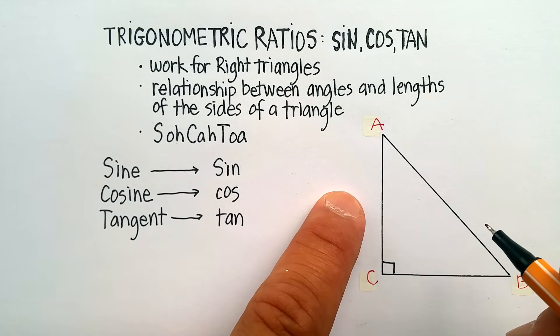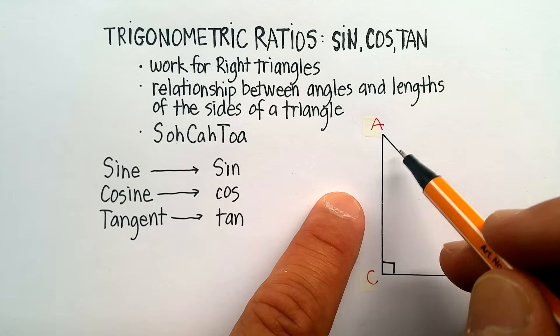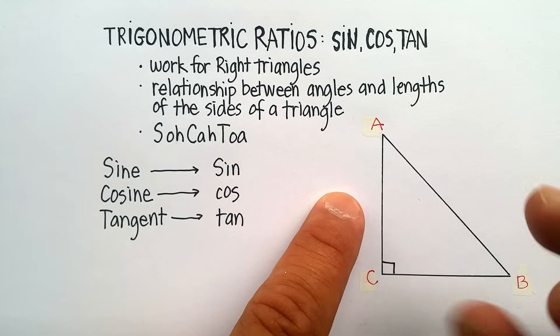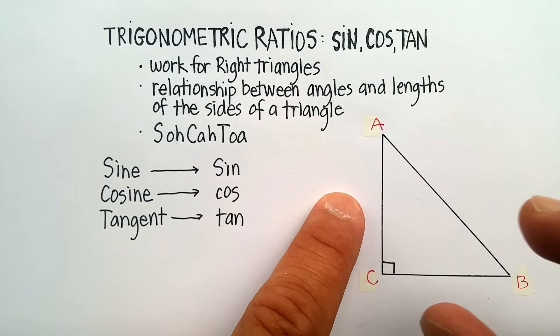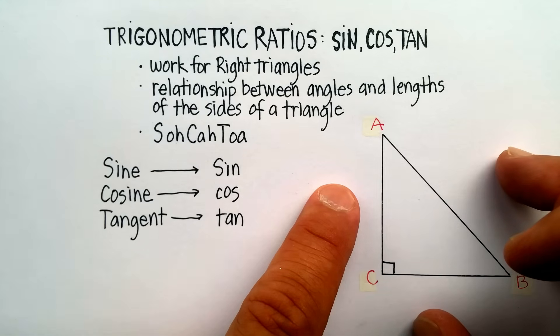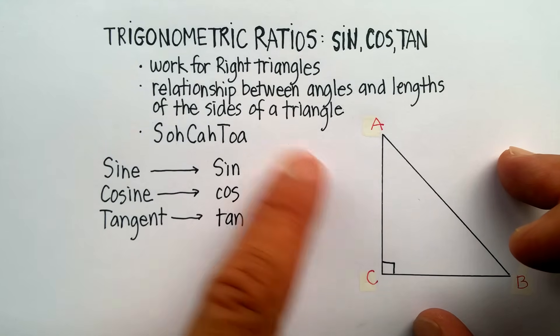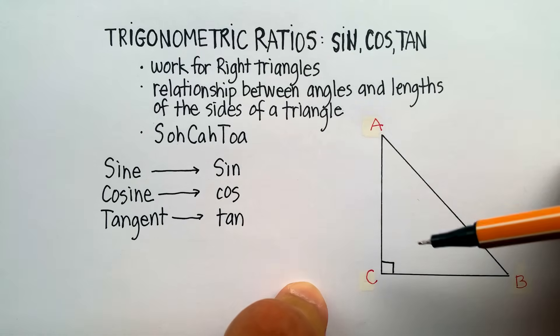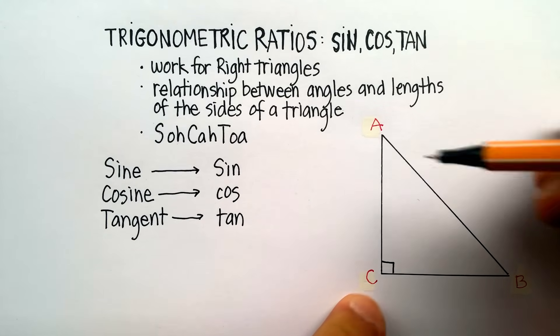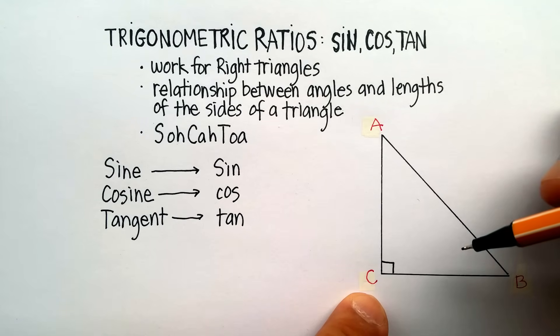And what the ancient Greeks discovered was that the relationship between the size of the angle and the length of the side are fixed ratios, no matter what size your right triangle is. Now, there's a lot more to trigonometric ratios than just right triangles. There's something called the unit circle and all that sort of thing. But I'm not going to talk about that. I'm just going to talk how it specifically relates to right triangles.